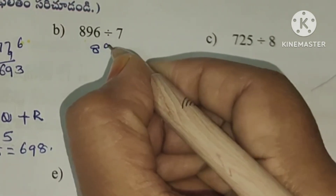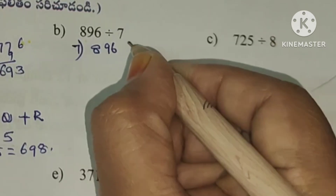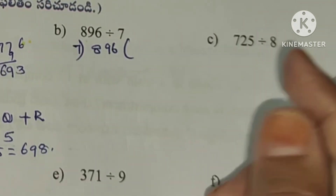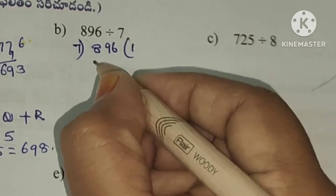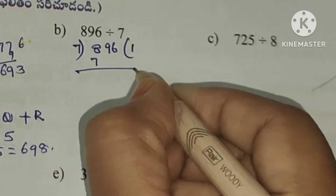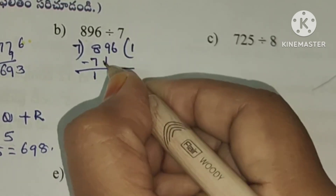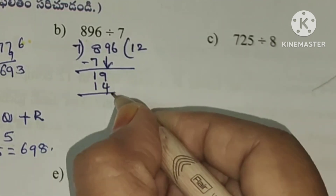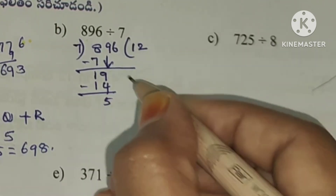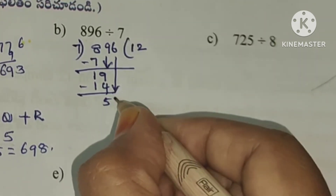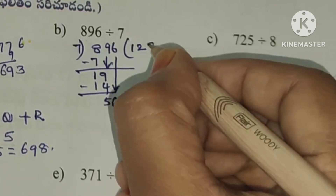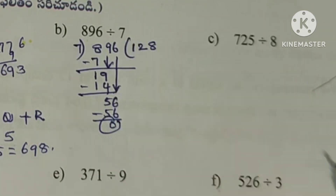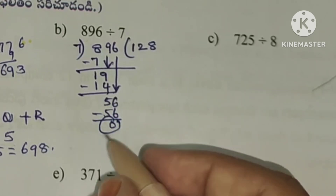Next: 896 divided by 7. First digit 8: 7 ones are 7, subtraction gives 1. Bring down 9, making 19. 7 twos are 14, subtraction gives 5. Bring down 6: 7 eights are 56, subtraction gives remainder 0.